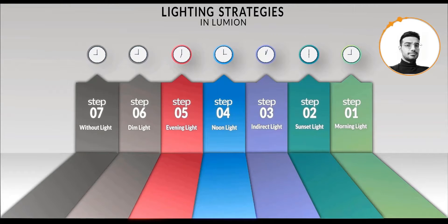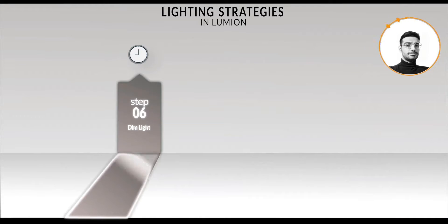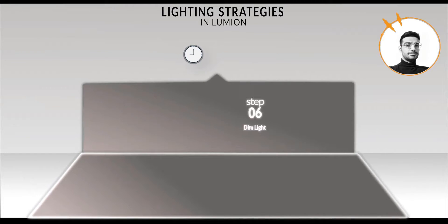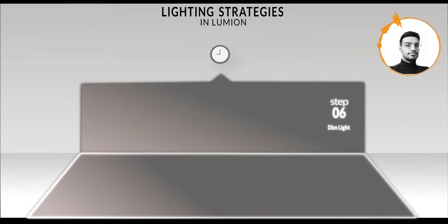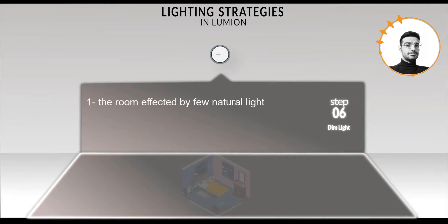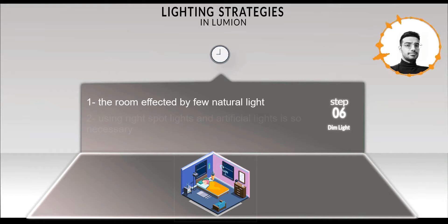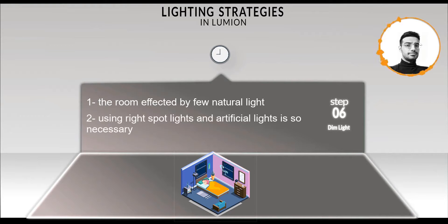Today I will show you how to create a realistic night render in Lumion. In night renders we have very little natural light from the sky coming into the room, so we should use artificial lights to illuminate our render. We should place spotlights and omni lights near our light sources in Lumion.